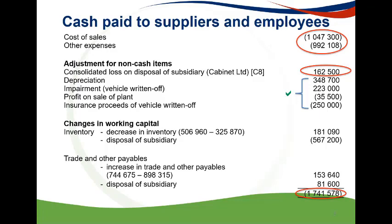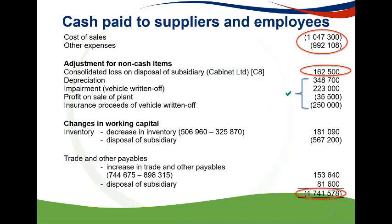The loss on disposal of the subsidiary would be included in other expenses in the statement of profit and loss. As this loss is a non-cash item, it would need to be removed from other expenses — many students did not make this adjustment. Depreciation is not an actual cash outflow and will typically be included in other expenses and should be removed. The additional information specifically stated that other income consists of dividends and interest received, so any additional income item would be accounted for under other expenses. Consequently, the profit on sale of plant as a non-cash item is also removed in this calculation.